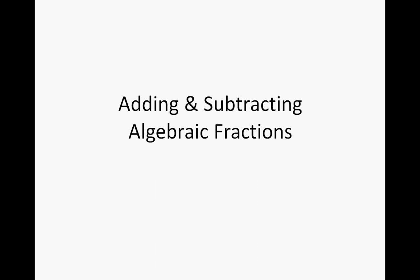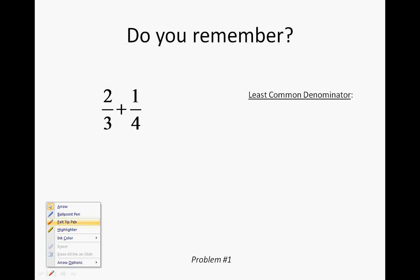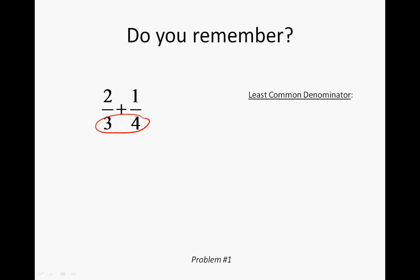Our first problem is a review: two-thirds plus one-fourth. This is different from multiplying and dividing fractions because we can't just add across numerators and add across the denominator. We have to find what is called the least common denominator before we can add or subtract. To find the least common denominator, you first look at your two denominators and find the least common multiple.